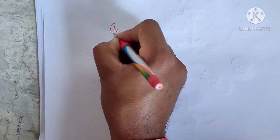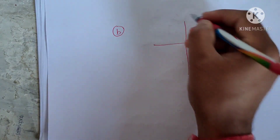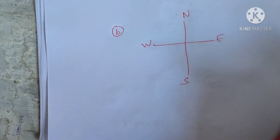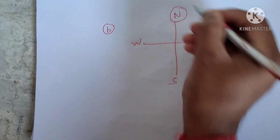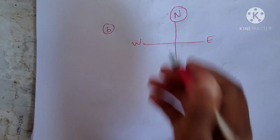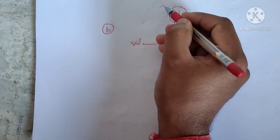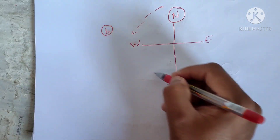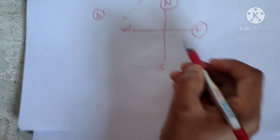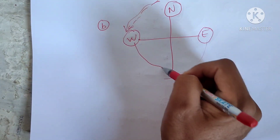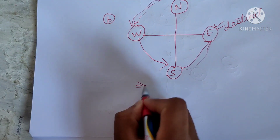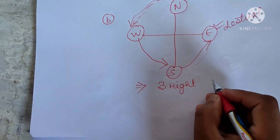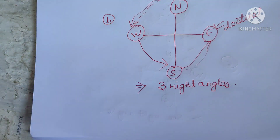For part (b), this is our first anticlockwise question. Anticlockwise means the opposite direction to a clock's hands. We are at north and turn anticlockwise to reach east. Going anticlockwise from north: the first turn reaches west, the second reaches south, and the third reaches east — our destination. So we make three right angles turning anticlockwise. Try the remaining ones.